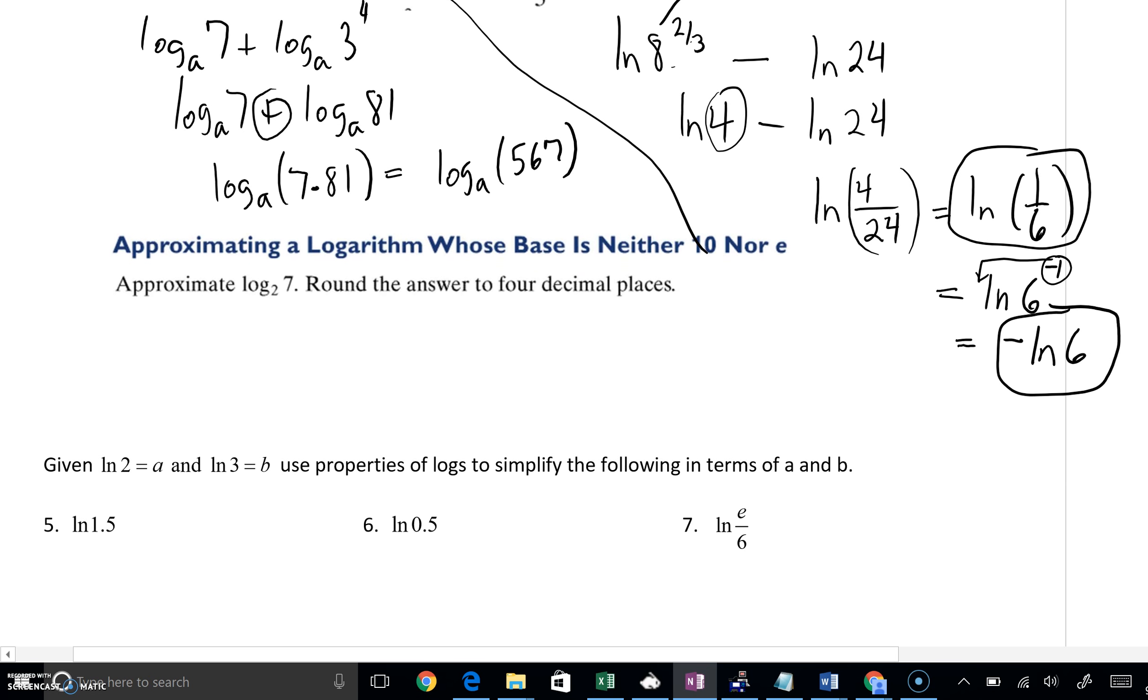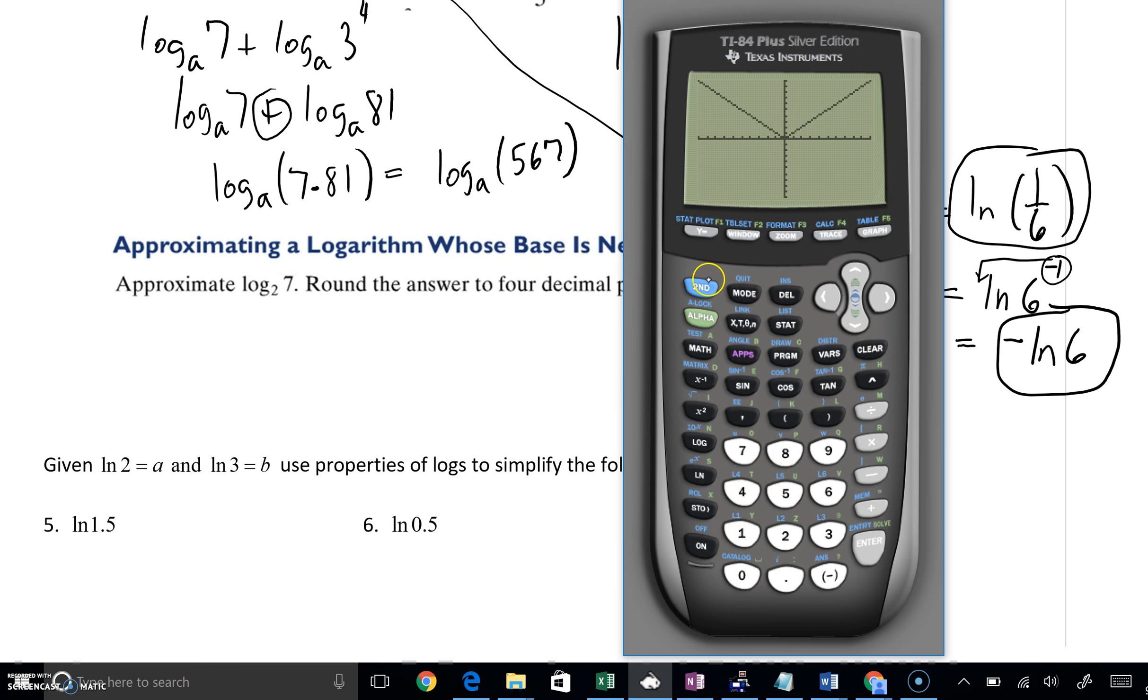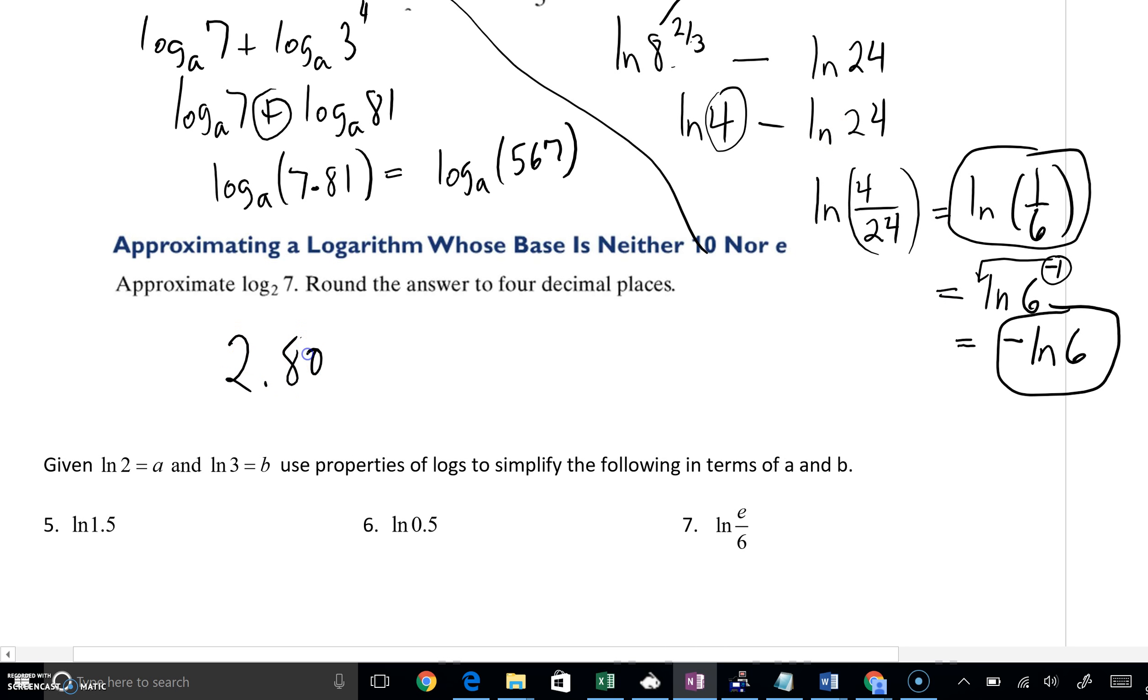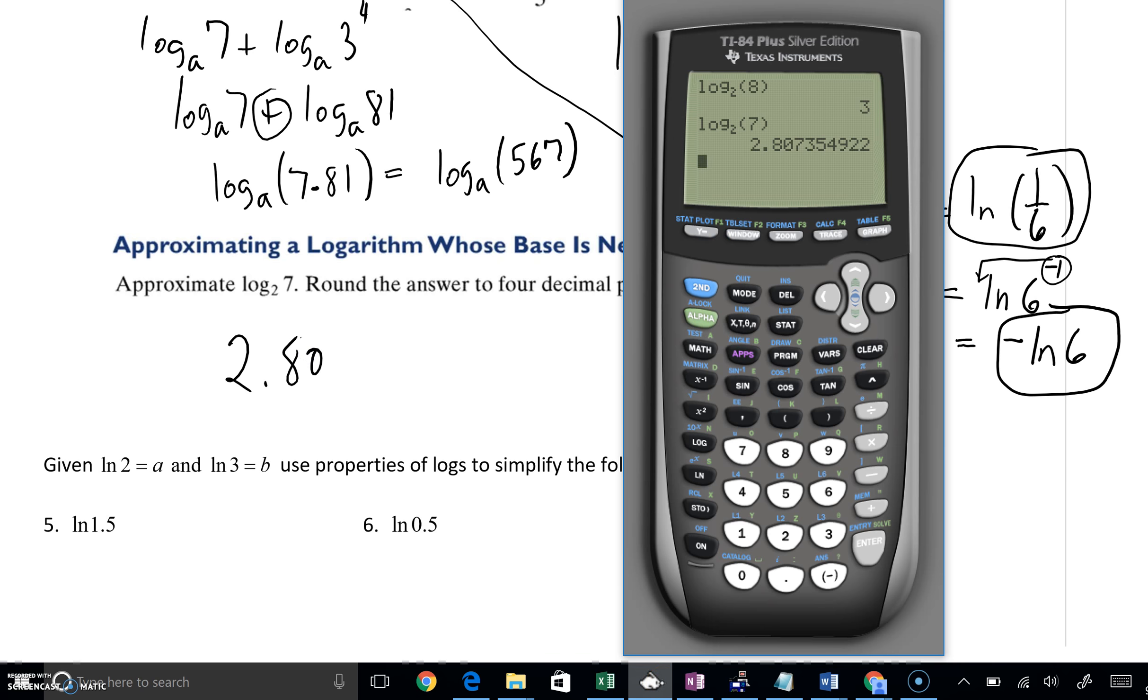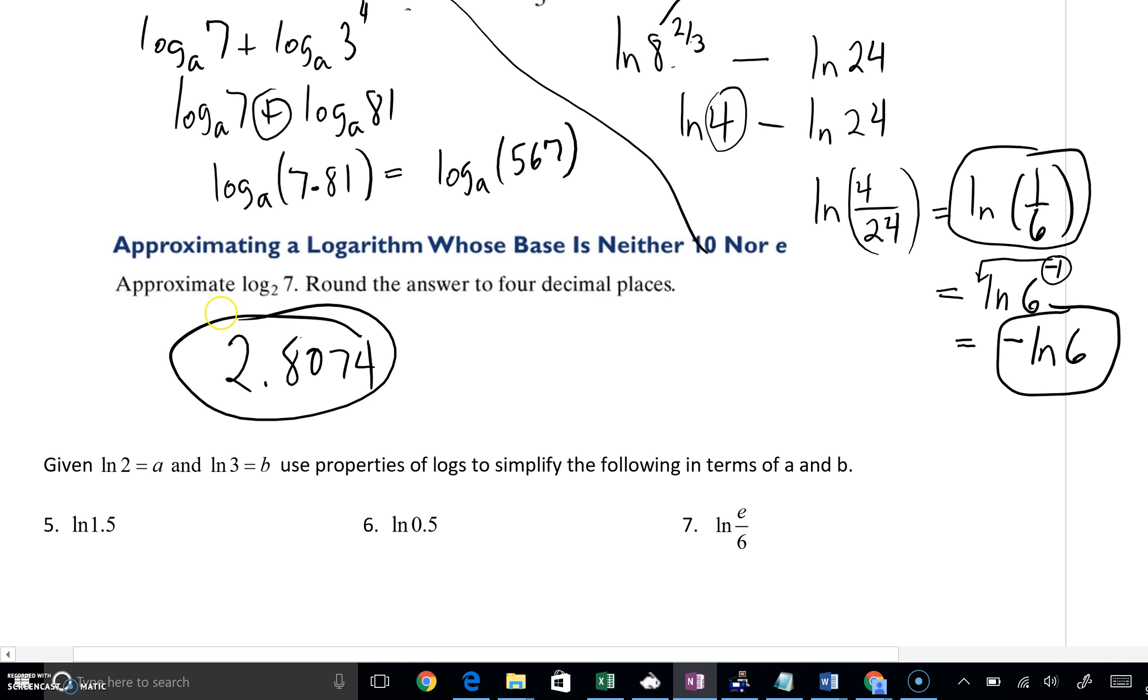We're getting there, we're moving right along. Log base 2 of 7. Wow, tell you what, let's get your calculator out. And let's go to the math button and go all the way down to log base. We've said before that there's only the natural log and log buttons on the faceplate. But if you needed to get a different base of a log, you could do it this way. And you can see we're going to four decimal places, 2.8074 when you round.